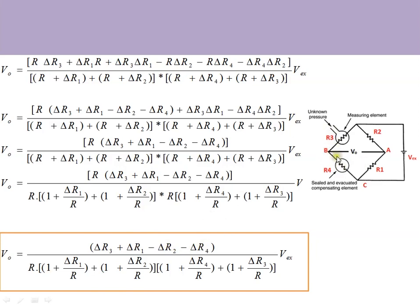Any changes other than those due to pressure — such as ΔR3 and ΔR4 in adjacent bridge arms — are automatically compensated because they appear as adjacent terms and cancel out. Therefore, the output is only proportional to the change in resistance caused by pressure variations.